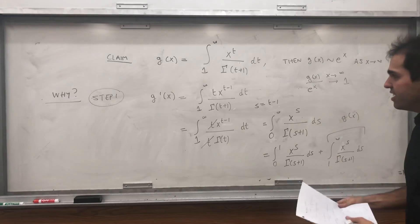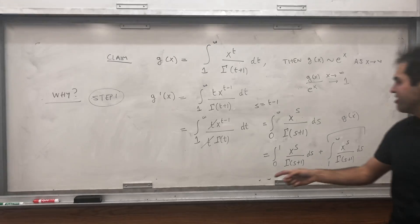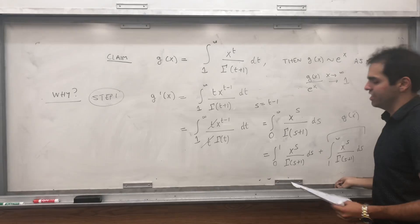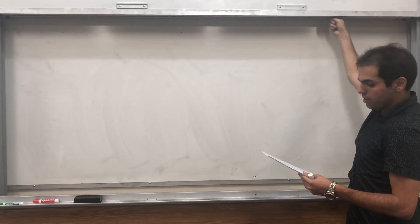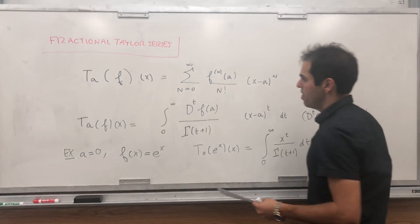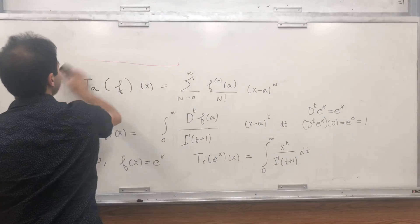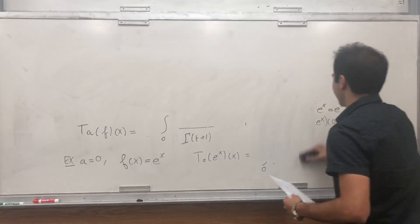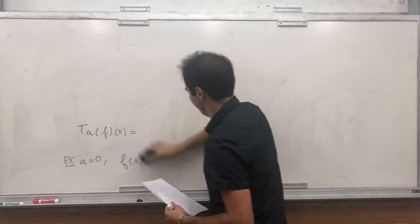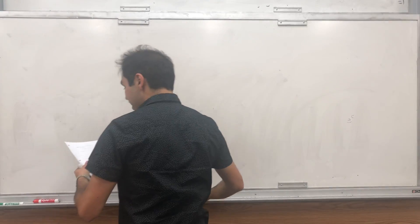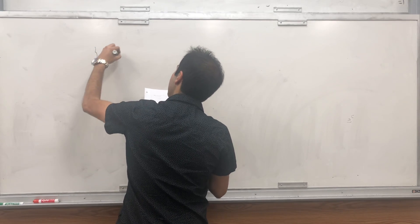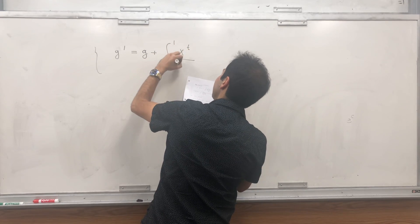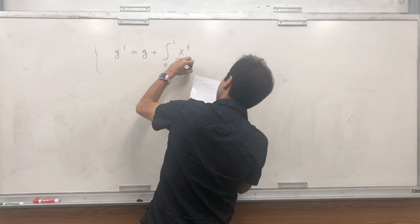So what do we get? g satisfies the kind of easy differential equation. It's g prime equals to g plus this little function here. Integral from 0 to 1, x to the t over gamma of t plus 1 dt. And again, I like this, not just because of the formula, but I think the proof is cute. It's very differential equation-y.